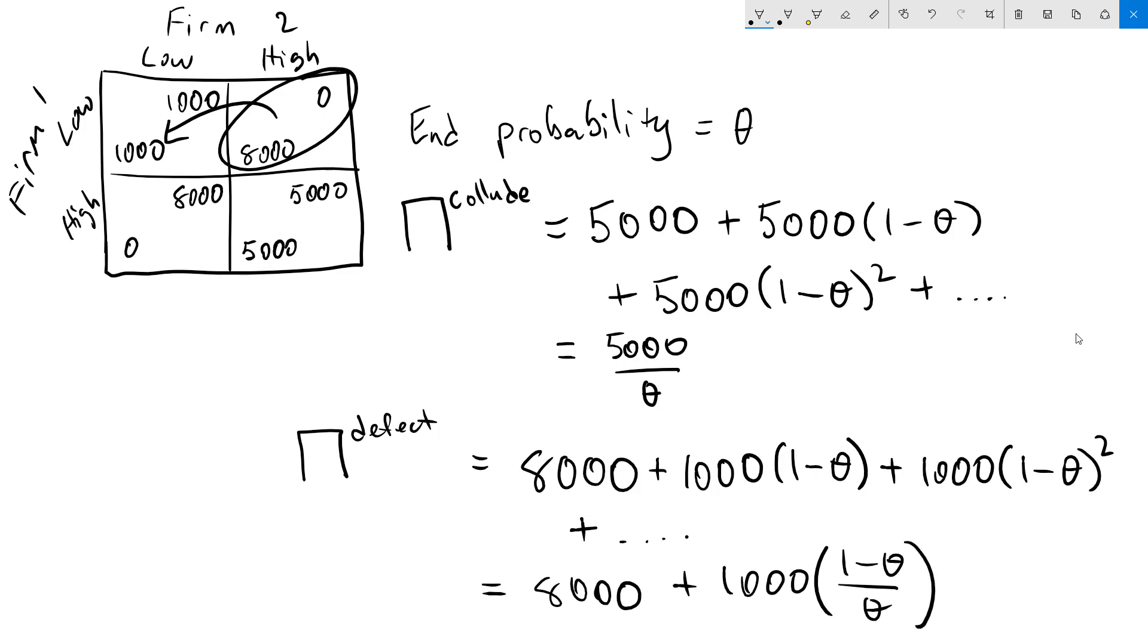We can now compare these two expected values, and if the value for defecting is greater than that for colluding, then collusion is not going to be possible. I'm going to write out the inequality here. Collusion can be sustained with Grim Trigger if the value for colluding is greater than or equal to the value for defecting.